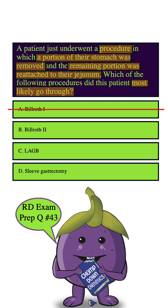Moving on to C — LAGB, which stands for Laparoscopic Adjustable Gastric Banding. This involves placing a band around the upper part of the stomach to basically create a small pouch. But it won't involve removing a portion of the stomach or reattaching it to the jejunum, so we can safely eliminate this answer choice as well.